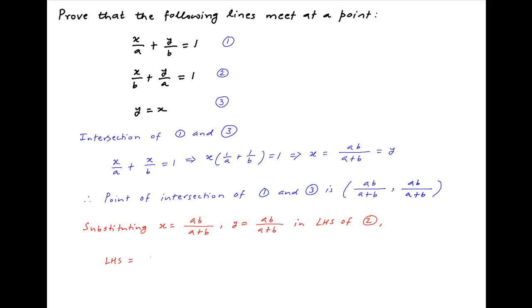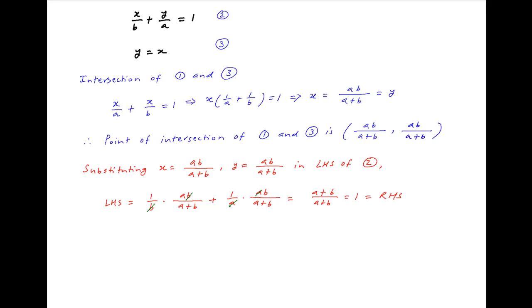Therefore, the value of the left-hand side equals (1/b)(ab/(a+b)) + (1/a)(ab/(a+b)), which simplifies to (a+b)/(a+b) = 1, which equals the right-hand side of equation 2.